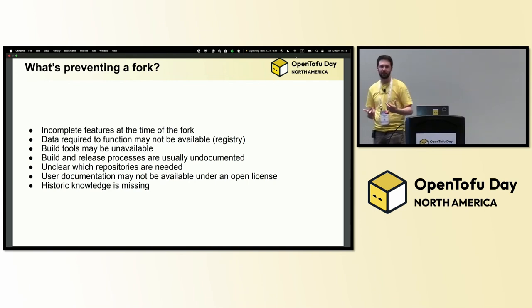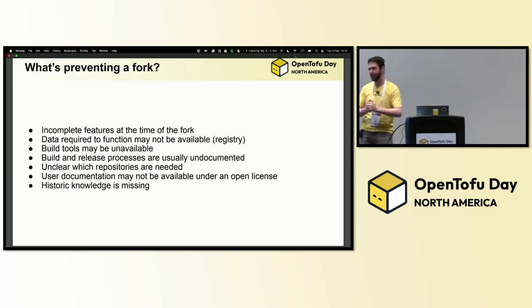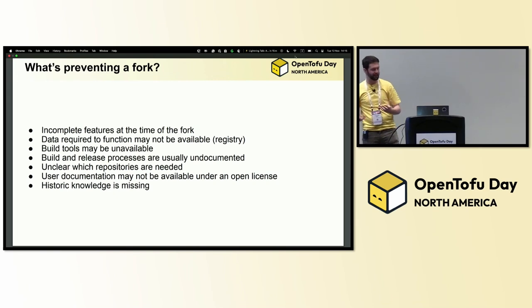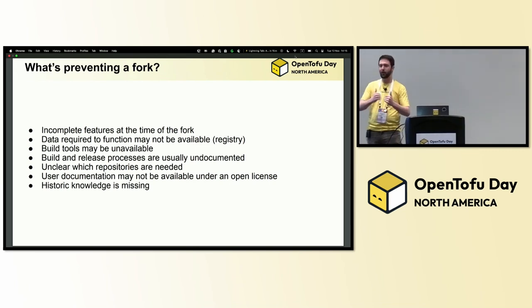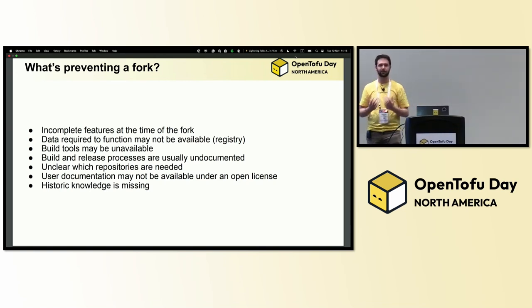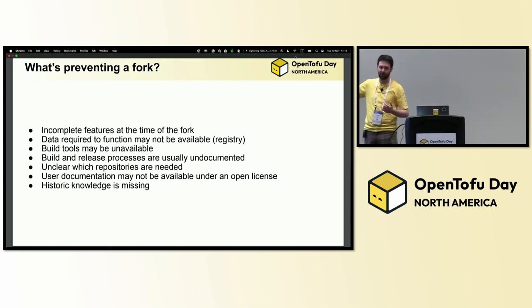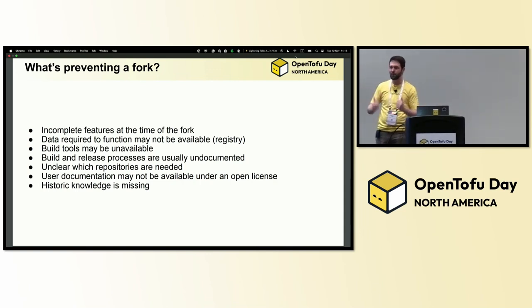What was preventing a fork? You think you'll just click the button that says create a fork, change a few names, and suddenly you've got something new. Well, it depends on what the code base looks like at that time. We had incomplete features in the 1.5 branch on the way to 1.6 that we had to pick up — partially complete code between releases. And then: they changed the terms of service on the registry so that any forks cannot use the Terraform and HashiCorp registry. This means you have to rebuild from scratch whole pieces of infrastructure to make a fork viable.